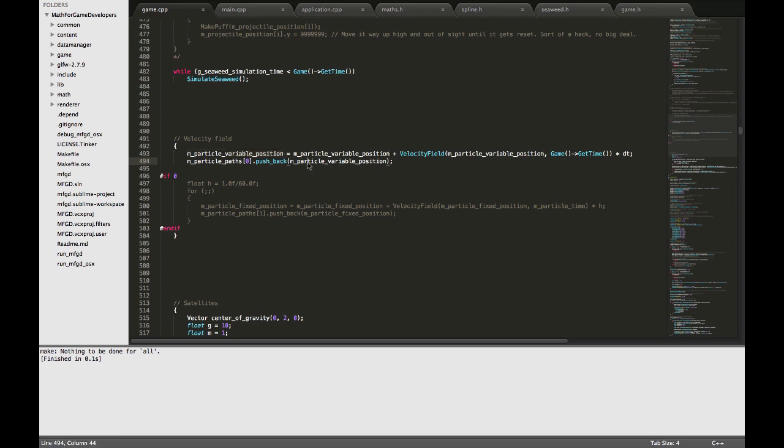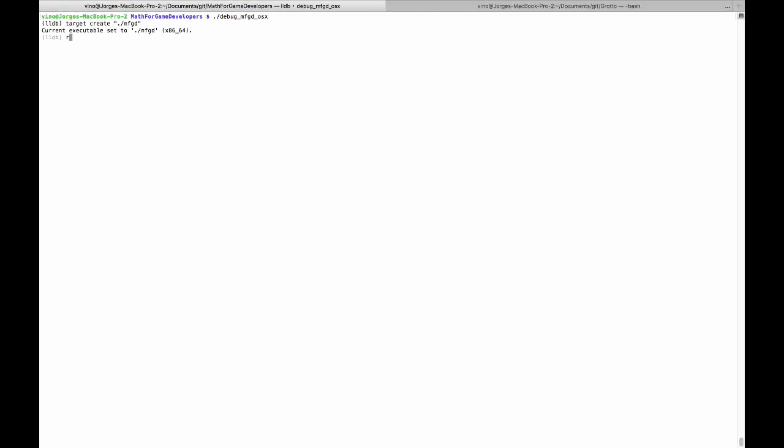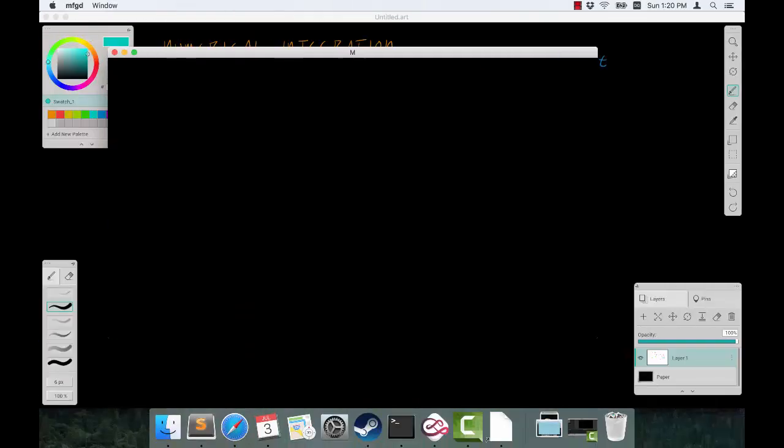We add it to the previous position and we get a new position. We assign our new position and then we push it onto a list of all the historical positions so that we can draw a line through the world. So let's take a look at that. We'll run it there.